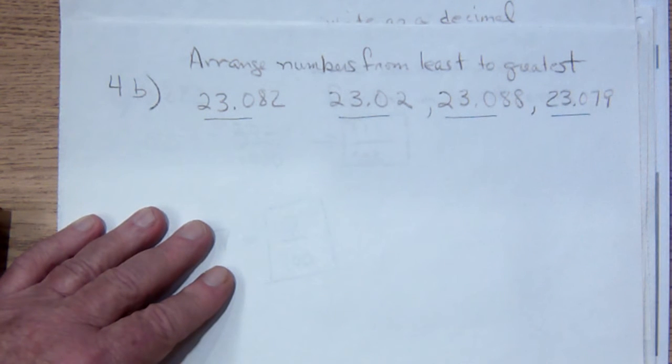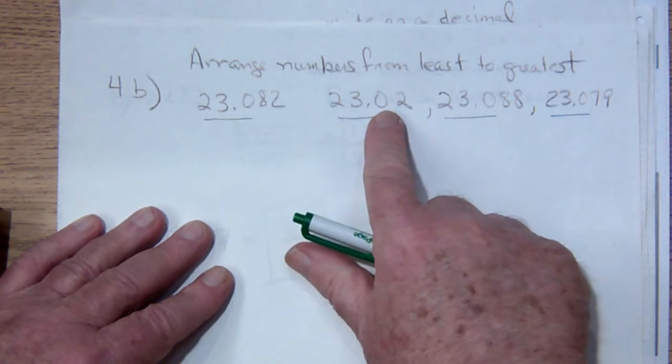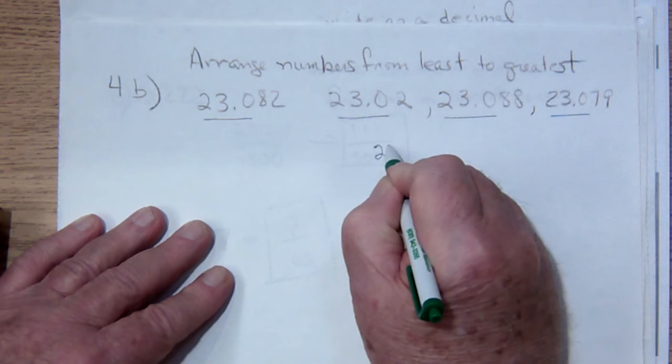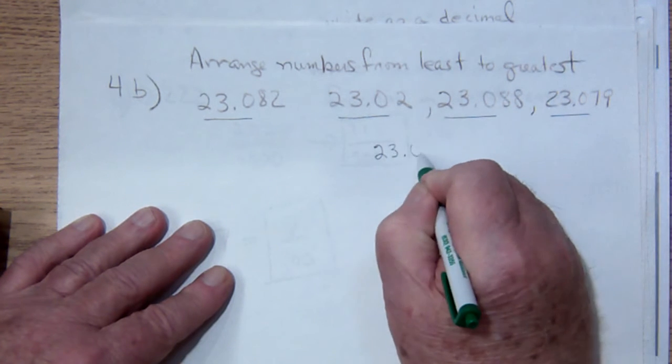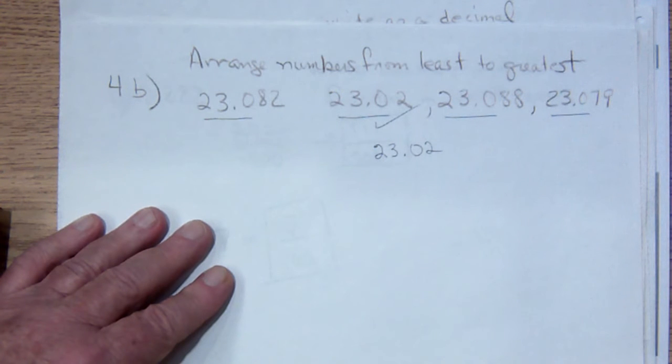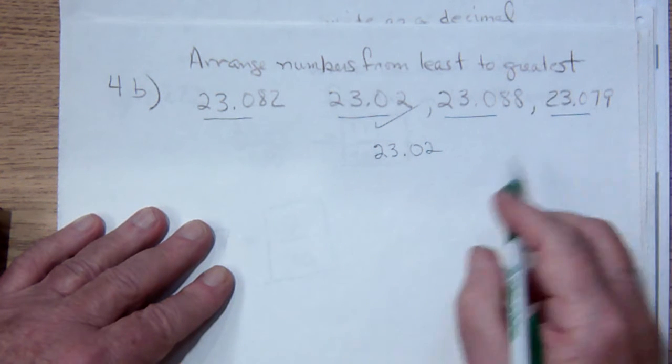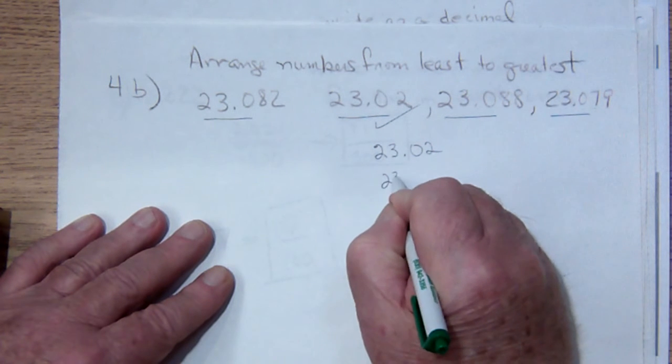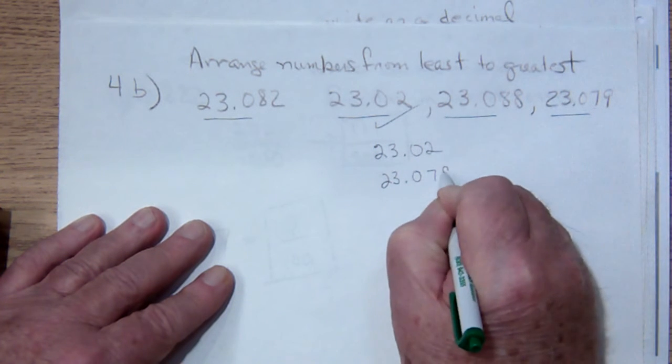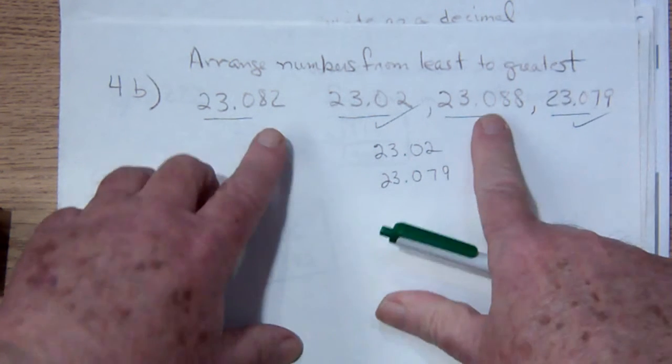But now I start putting these in order. Remember, the smallest next number is going to be the 2, and so that is going to be the smallest 23.02. So I've taken care of that one. The next smallest number has a 7 in that place, so this will be 23.079.